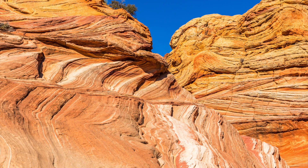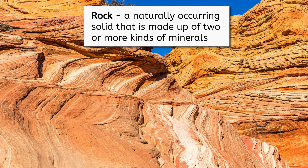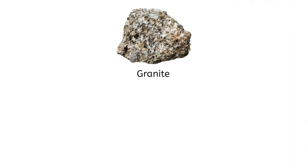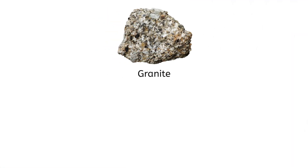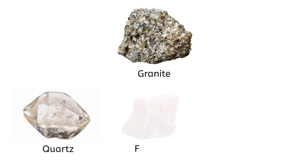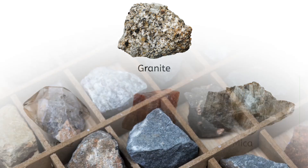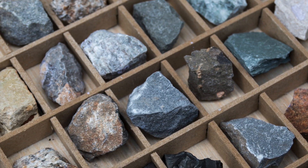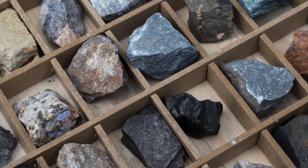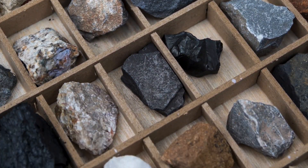On the other hand, a rock is a naturally occurring solid that is made up of two or more kinds of minerals. For example, granite is a type of rock composed of the minerals quartz, feldspar, and mica. These minerals combine to form a rock with a unique appearance and properties. Varying combinations mean that there are thousands of different kinds of rocks as well.